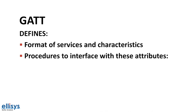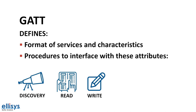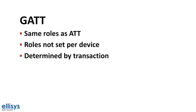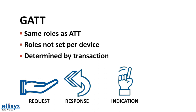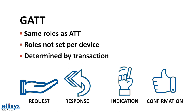So what is the generic attribute profile? GATT defines the format of services and their characteristics, and the procedures used to interface with these attributes — such as service discovery, characteristic reads, characteristic writes, notifications, and indications. GATT takes on the same roles as the attribute protocol. The roles are not set per device but are determined per transaction. For example, when a request is sent, it is sent by the client and the server responds. In the case of an indication, it is sent by the server, which requires the client to return a confirmation packet. Similar to ATT, a device can act as both a GATT server and a client at the same time.